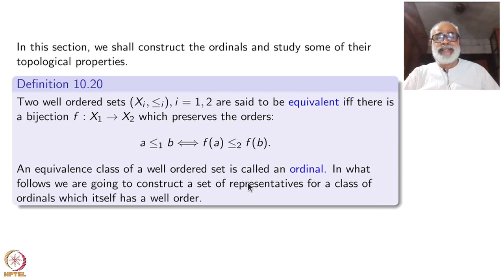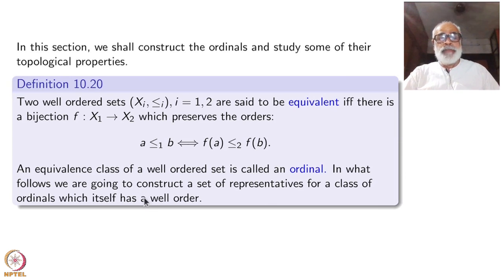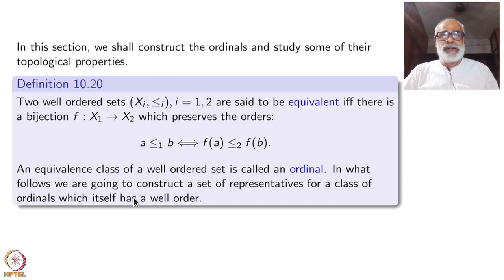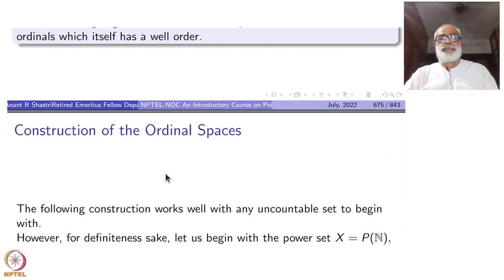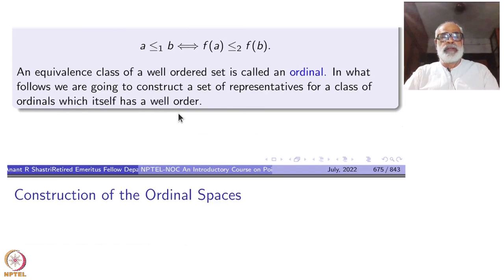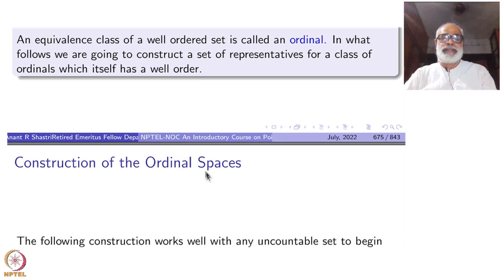In what follows, we are going to construct a set of representatives for a class of ordinals — not all ordinals, but a large number of ordinals. We will construct that set, which itself is well-ordered. It will be one set of representatives, and that will be a set. That will cover a sufficiently large number of ordinals, and that collection itself will be well-ordered. This is the construction of the ordinal space.